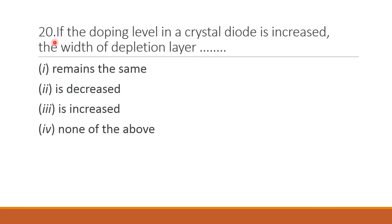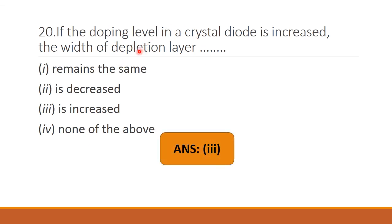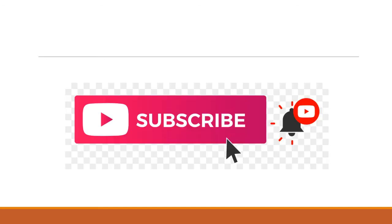Next question: If the doping level of a crystal diode is increased, the width of the depletion layer — option 1: remains the same, option 2: decreased, option 3: increased. If we increase the doping level, then the width of the depletion layer gets decreased — option 2 is the right answer. I hope you all have understood the MCQ questions. If you like this video, kindly subscribe to my channel and share with your friends. Thank you.